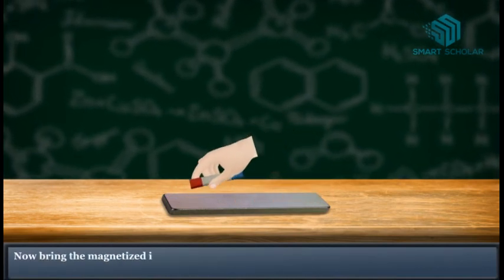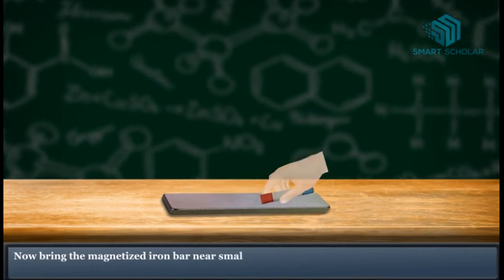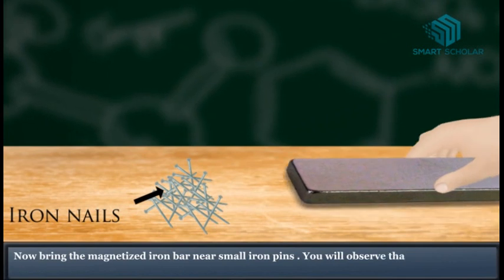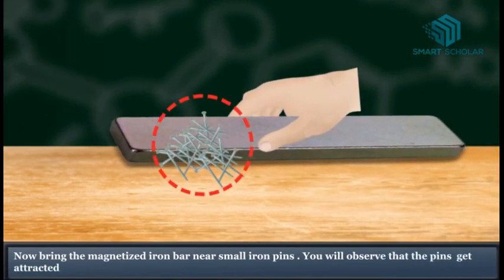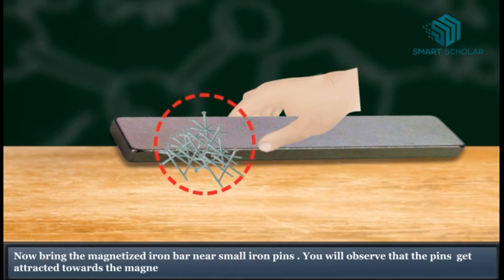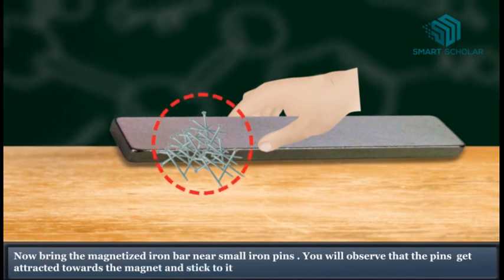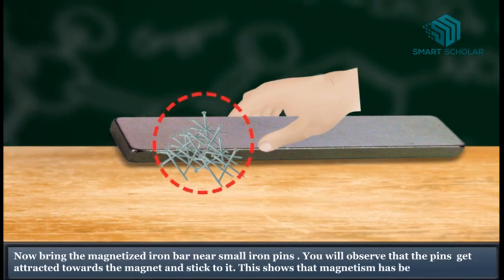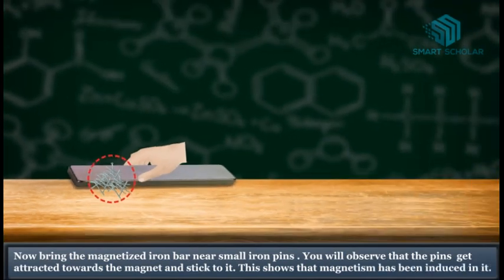Now bring the magnetized iron bar near small iron pins. You will observe that the pin gets attracted towards the magnet and sticks to it. This shows magnetism has been induced in it.